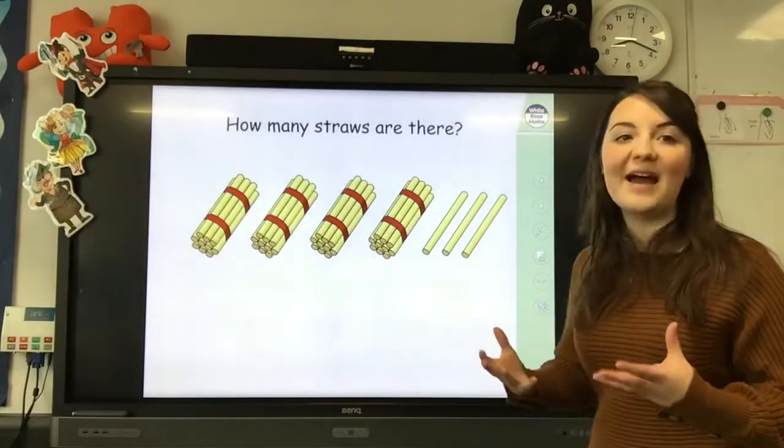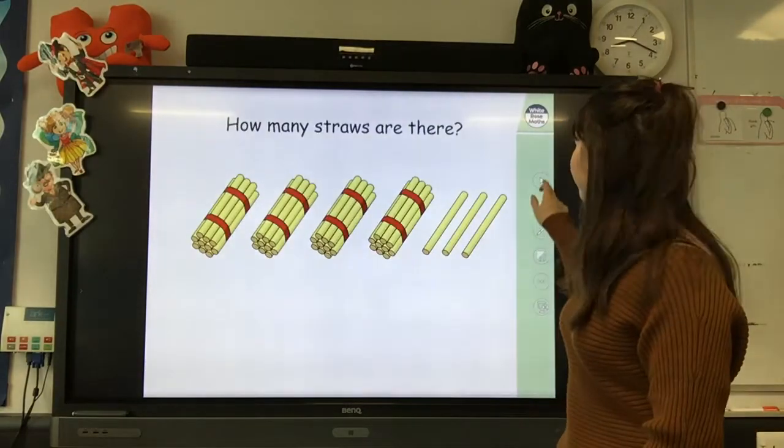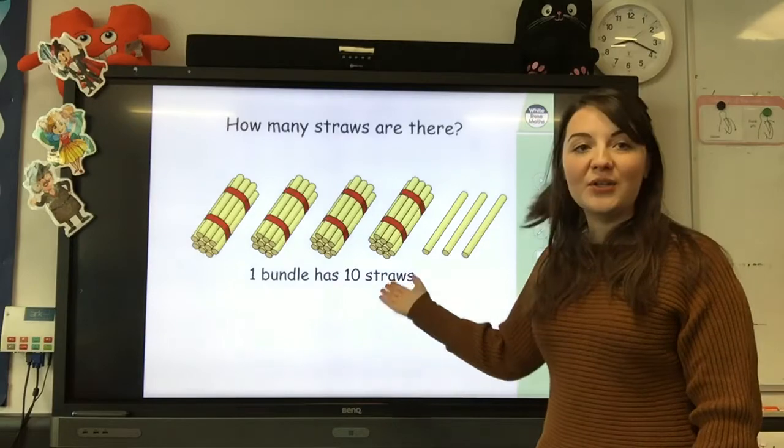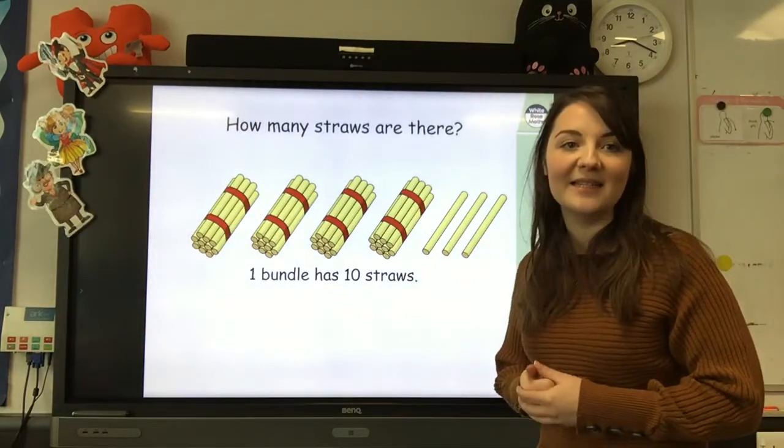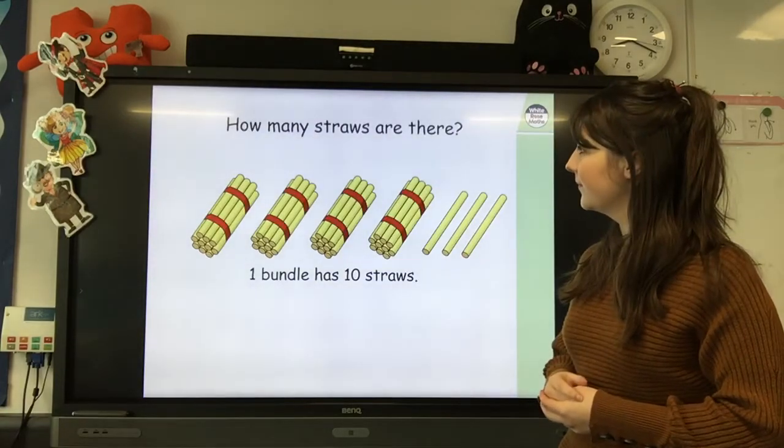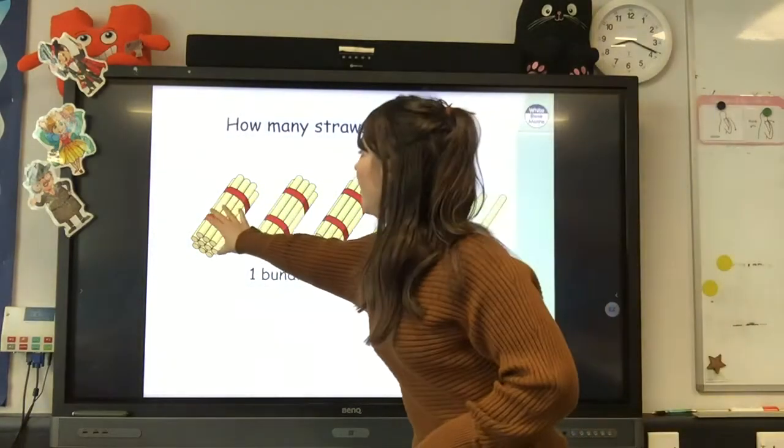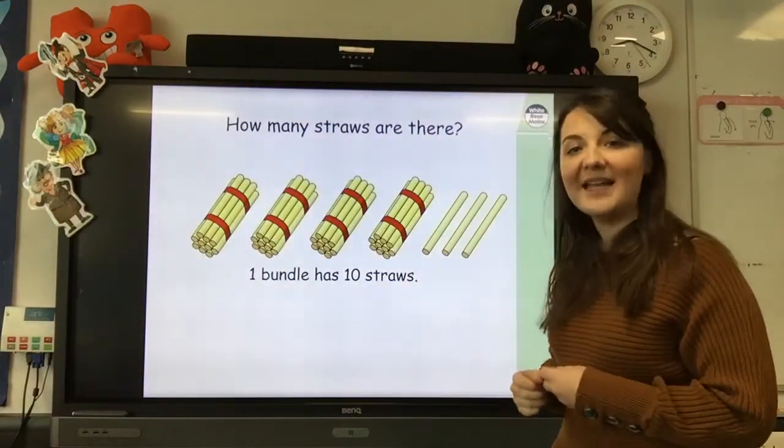Now we have some straws. It says, how many straws are there? One bundle has 10 straws in it. How many tens can you see here? 1, 2, 3, 4. There are 4 tens.